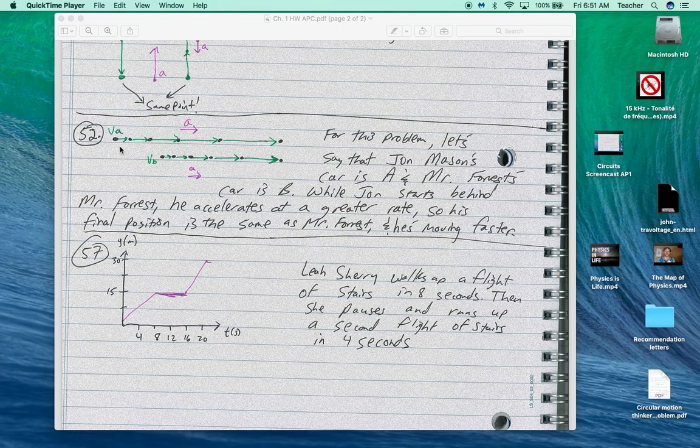So John started behind Mr. Forrest, accelerated at a greater rate. So at this instant in time, we're at the same spot at the same time. Because of the longer arrow, you can tell that John's car is moving faster. So he's about to pass me.